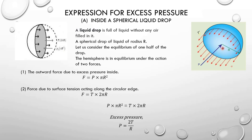What is the force due to excess pressure? Force equals pressure into area. The cross-section of the liquid drop is a circular cross-section, so this area is πR². Therefore, the force due to excess pressure is F = P × πR².